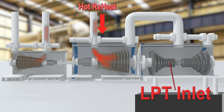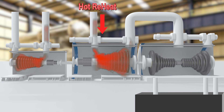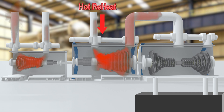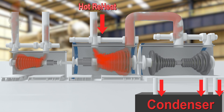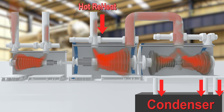From the IP Turbine, steam goes to the LP Turbine. After expansion in the LP Turbine, the steam pressure as well as temperature goes very low — on the verge of condensation. Finally, this low-energy steam is sent to the condenser for condensation, and the condensate water is reused as feed water.